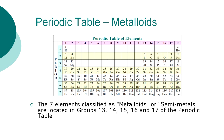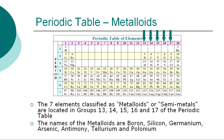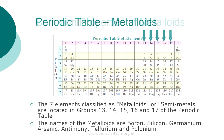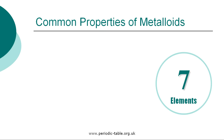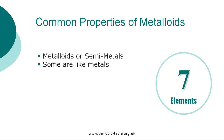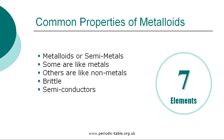The seven elements classified as metalloids or semi-metals are located in groups 13 to 17 of the periodic table: boron, silicon, germanium, arsenic, antimony, tellurium, and polonium. Metalloids are the elements found between the boundaries that distinguish metals from non-metals. Metalloids can have some properties partially like metals and partially like non-metals. The terms brittleness, semi-conductivity, and metallic luster are often used as distinguishing indicators of metalloid status.